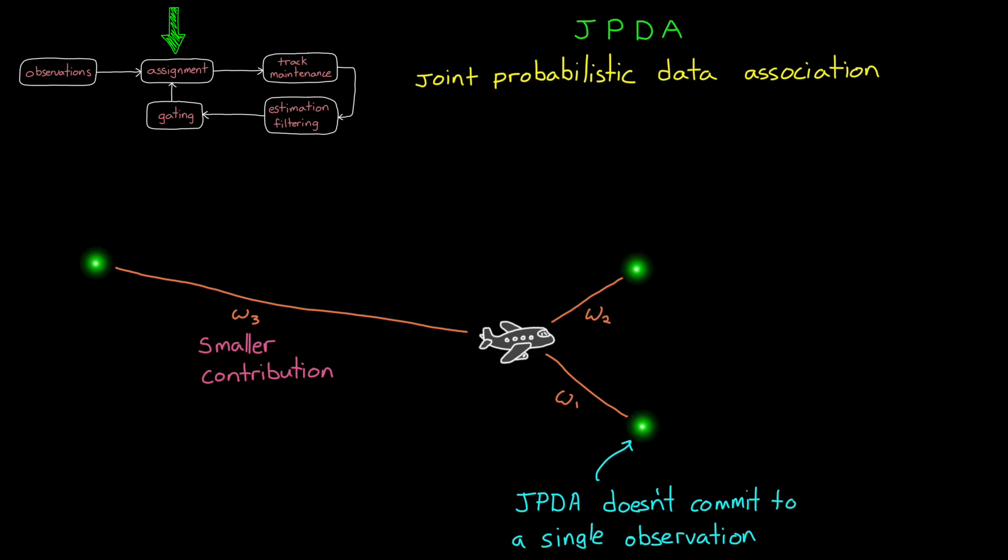And this is an improvement over GNN, because if there are two observations that could be the object, the JPDA won't fully commit to one, possibly the wrong one. So, if the tracked objects are clustered near each other, and the observations are all clustered near them too, this algorithm can handle that by blending a few of them together, rather than jumping around between right and wrong detections.